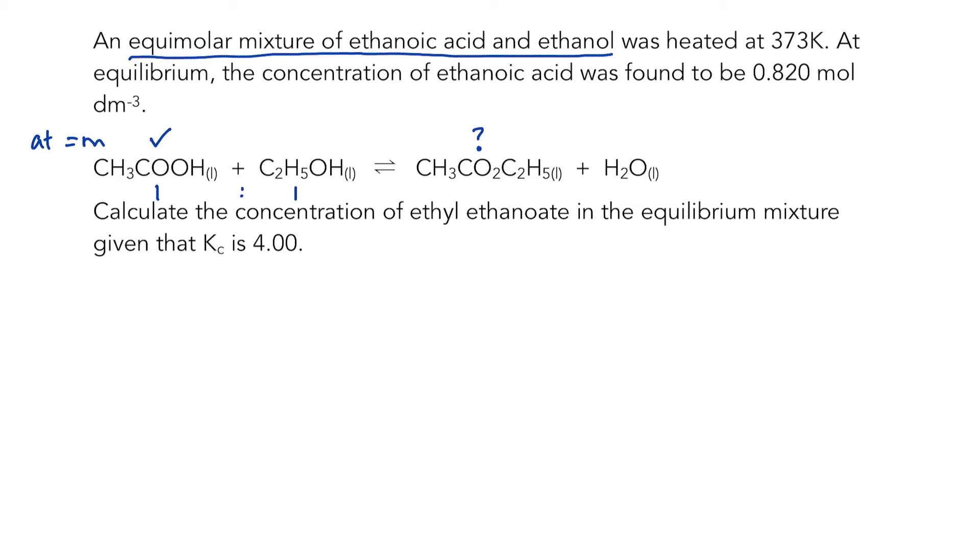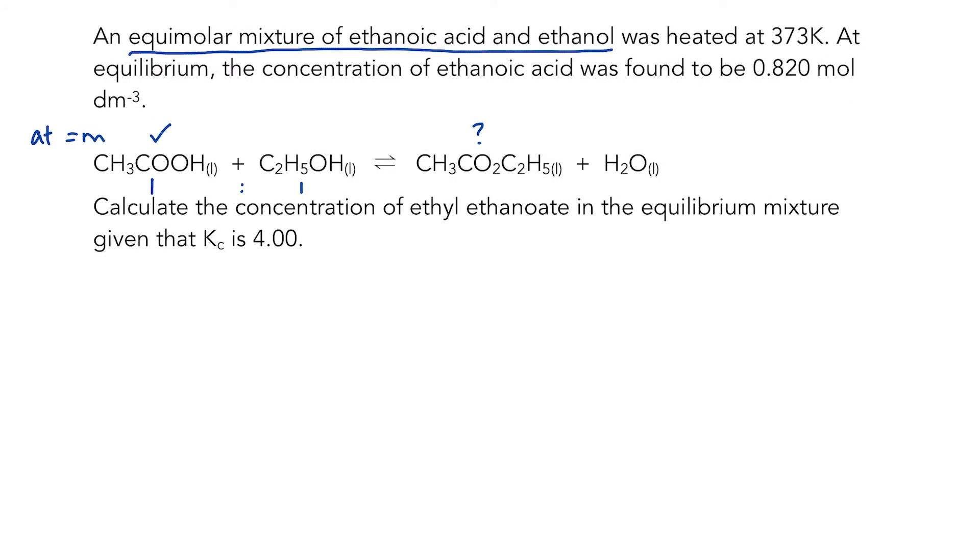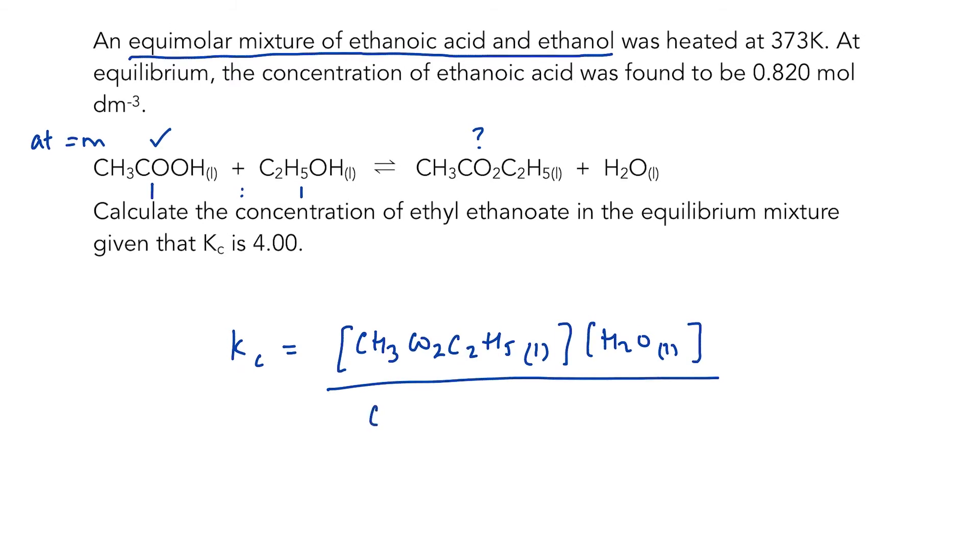Let's start to pull this apart. Let's write out our expression for Kc. Kc equals products over reactants, so that's CH3CO2C2H5 in square brackets, H2O in square brackets, over our reactants which are the ethanoic acid...